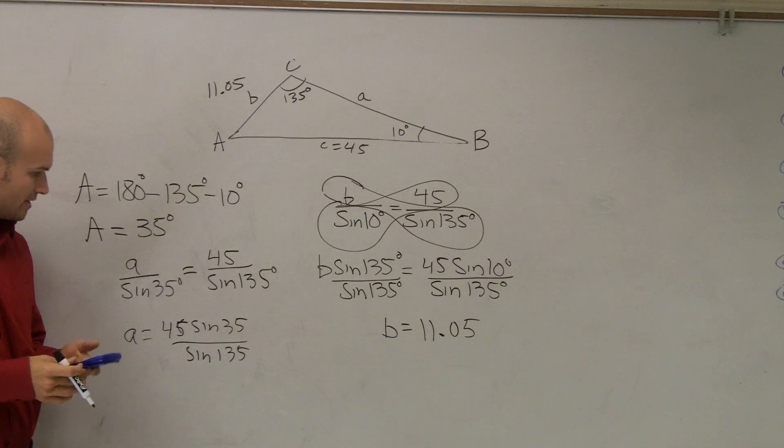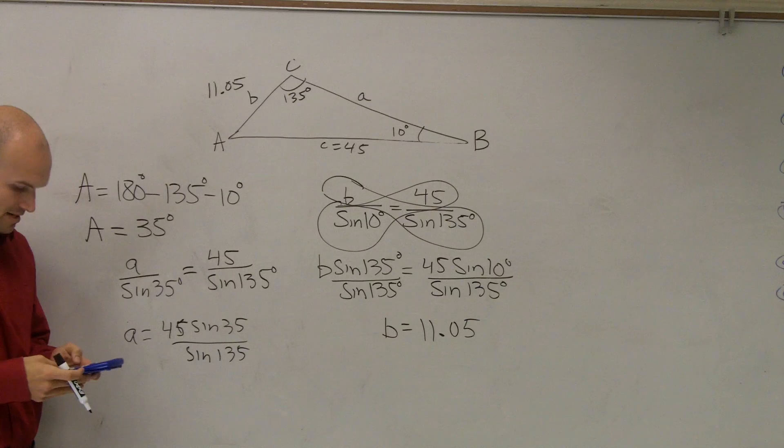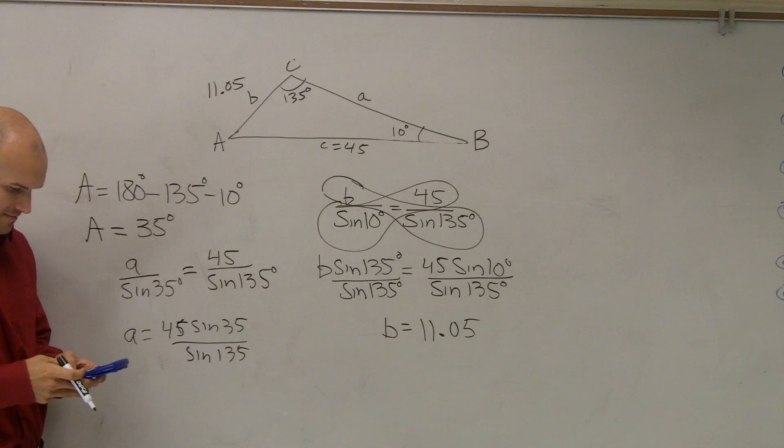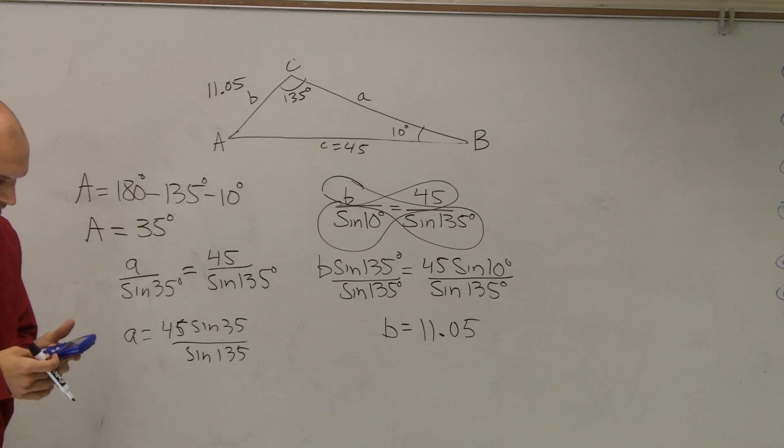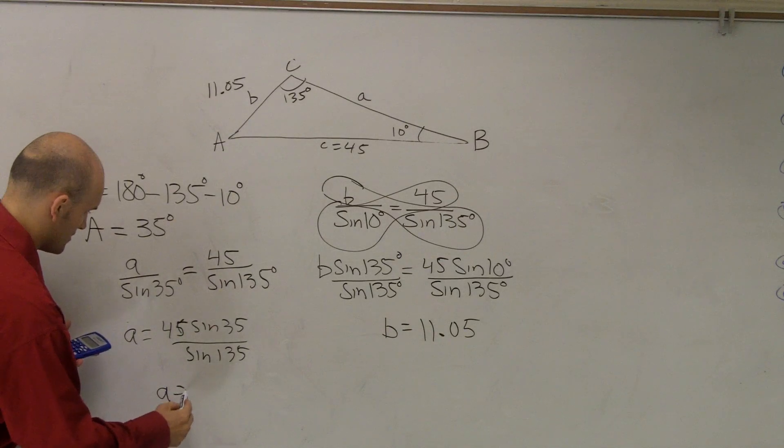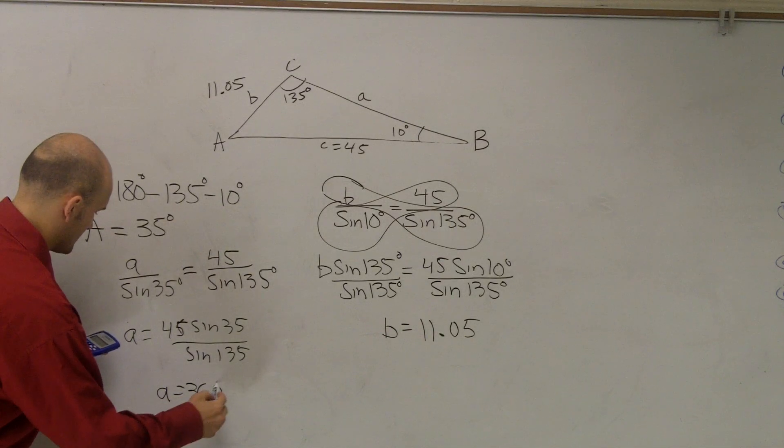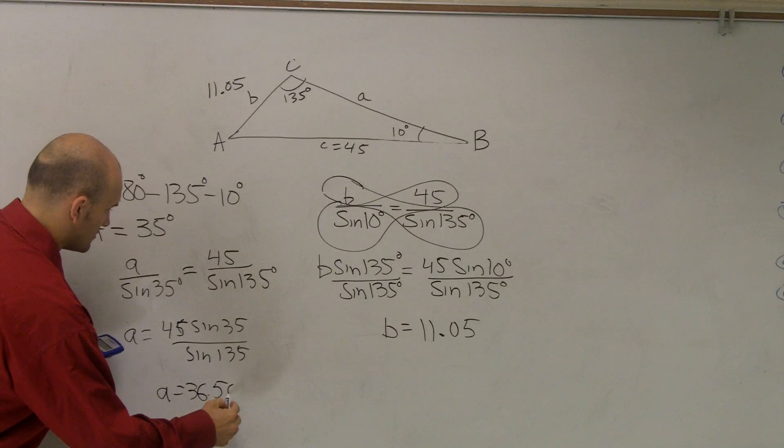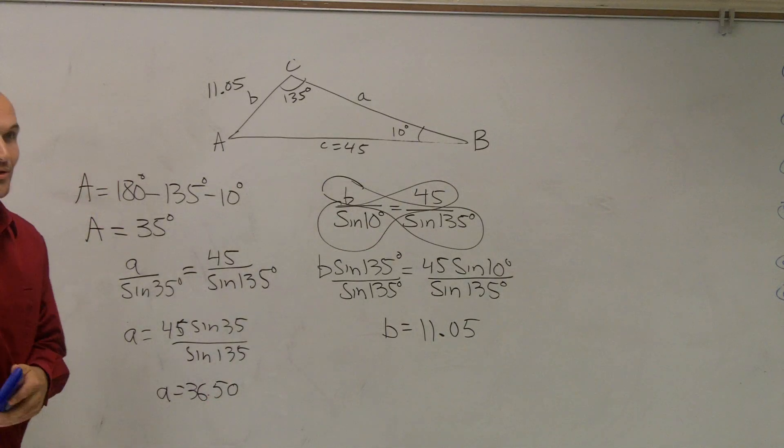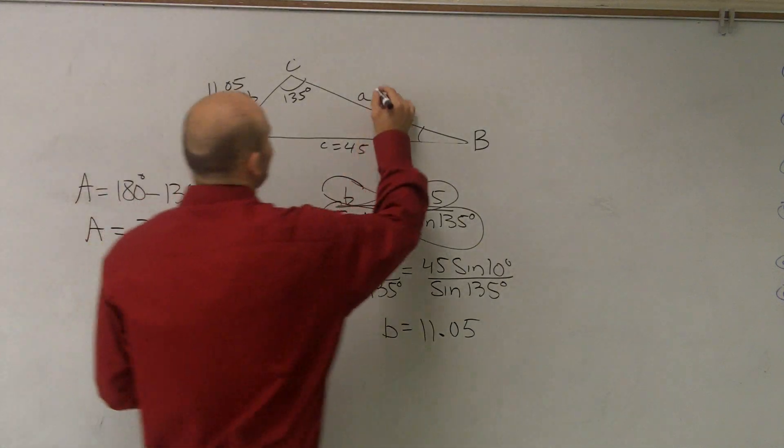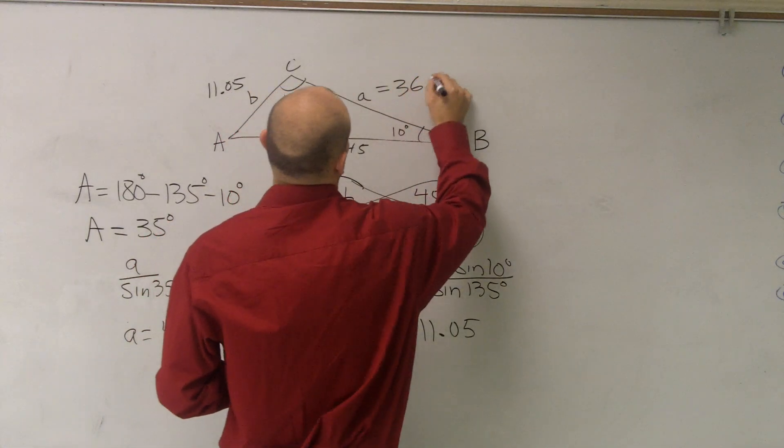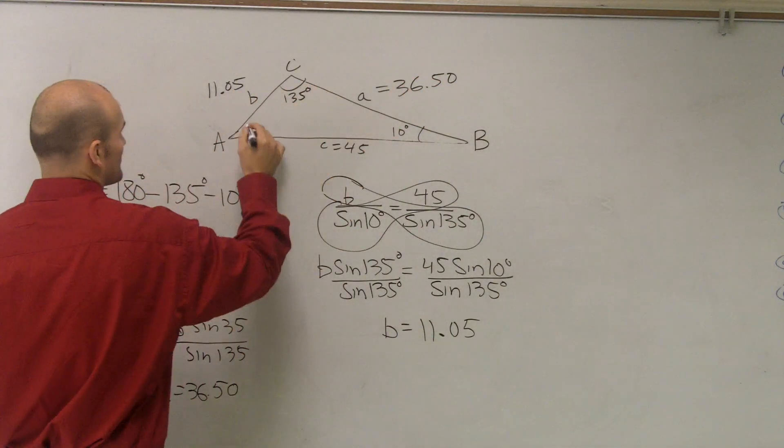So then here, I just go ahead and do 45 times sine of 35. Close my parentheses. Divided by sine of 135. And I get 36.5. 36.50 equals 35 degrees.